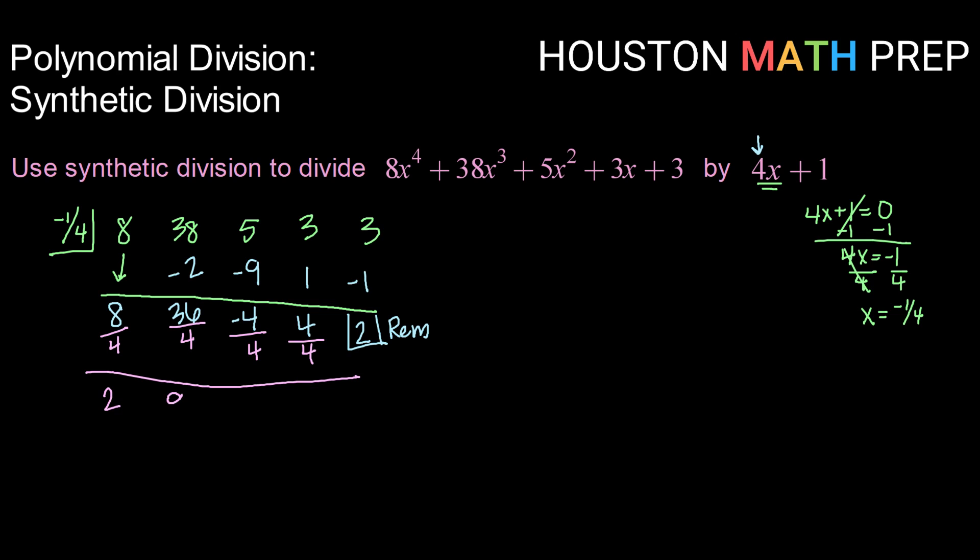So that makes our actual coefficients: 8 divided by 4 is 2, 36 divided by 4 is 9, negative 4 divided by 4 is negative 1, and 4 divided by 4 is 1. We leave our remainder alone; we only divide the others. Those become our coefficients. So our answer is 2x cubed plus 9x squared minus x plus 1 plus our remainder of 2 over 4x plus 1.